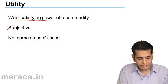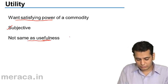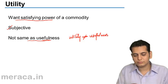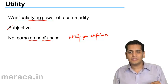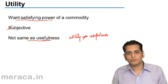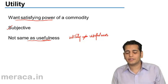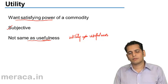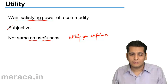Utility is not the same as usefulness — utility does not equal usefulness. There may be many things which are useful but might not have utility. Conversely, there may be other things which have utility but are not useful. For example, cigarettes, alcohol, and drugs.